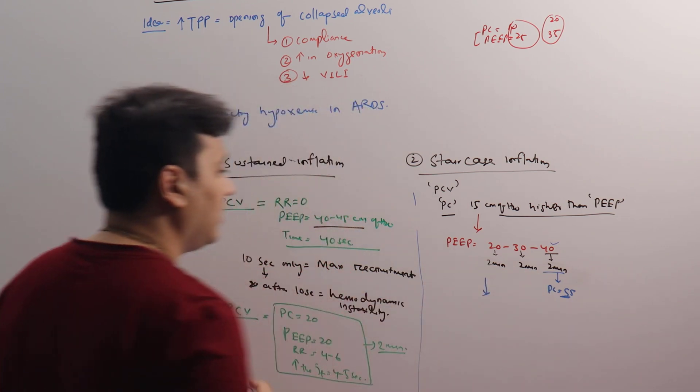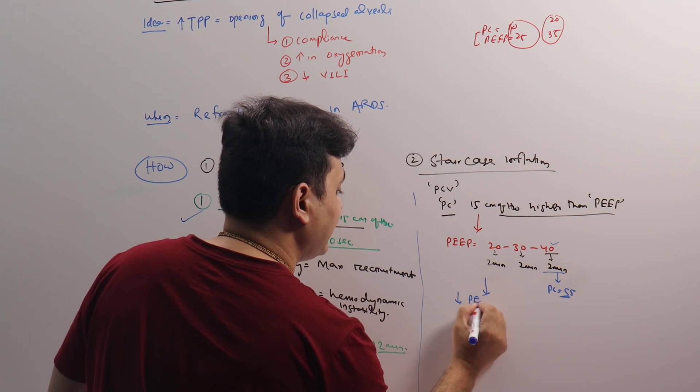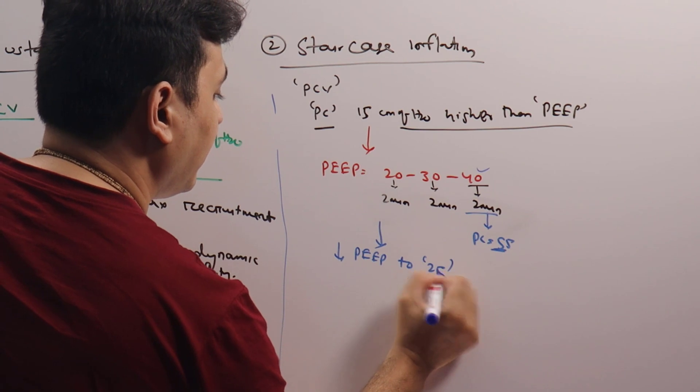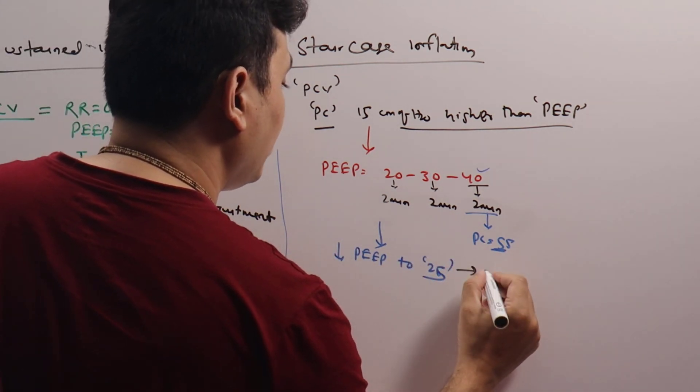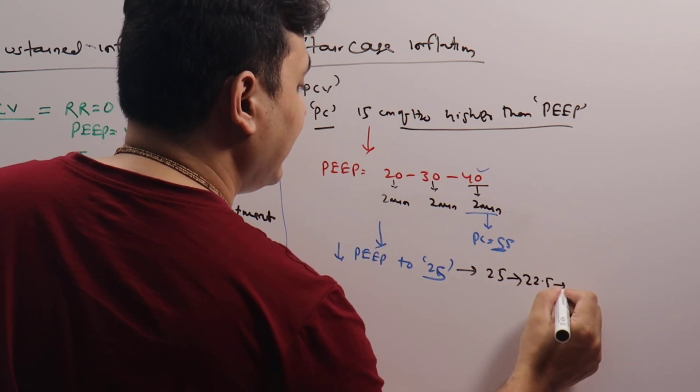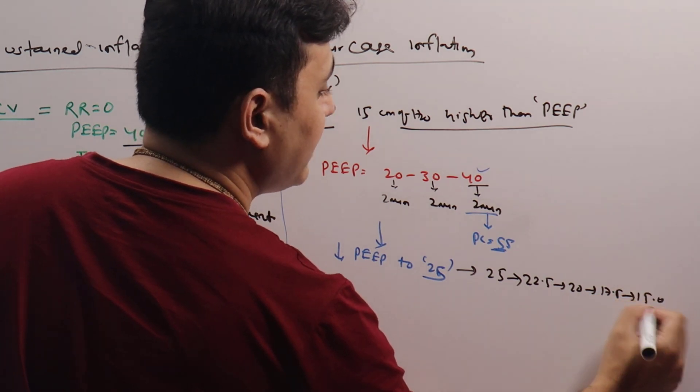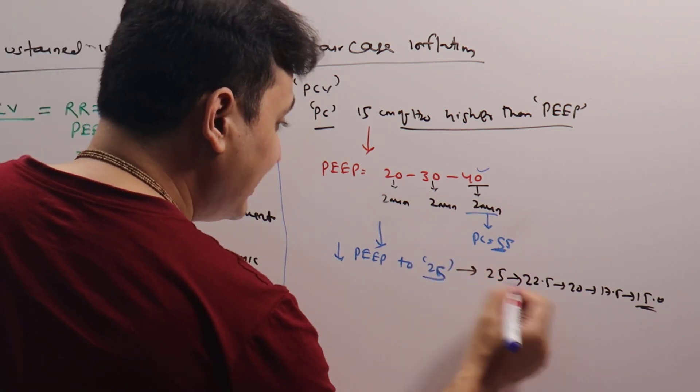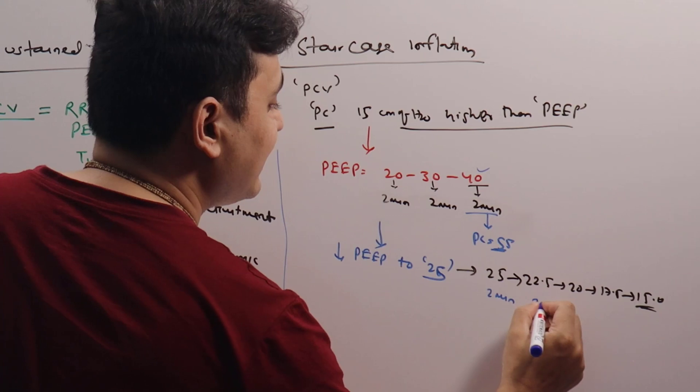Once the patient is on PEEP 40 for 2 minutes, then we will decrease the PEEP to 25, then gradually decrease from 25 to 22.5, then to 20, then to 17.5, then to 15. This is the bare minimum. And all this while you keep them on these PEEPs for 2 minutes.